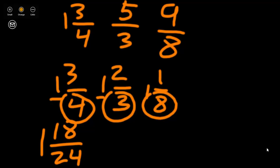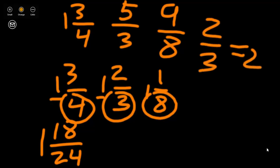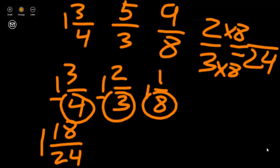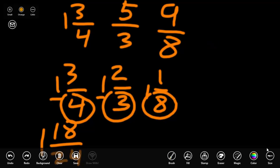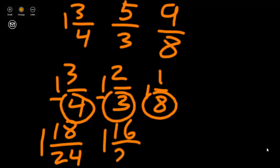Let's change 2/3rds to a fraction with a common denominator of 24. I'm going to ignore my 1 since we have 1 as a whole number in each of our mixed numbers. For 2/3rds, what do we multiply by 3 to get to 24? 3 times 8 equals 24. So we do the same to our numerator: 2 times 8 equals 16. Our equivalent fraction is 16/24ths, so 1 and 2/3rds is equivalent to 1 and 16/24ths.